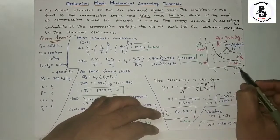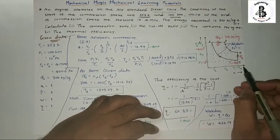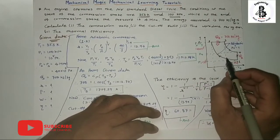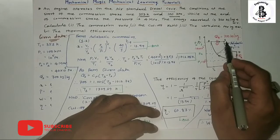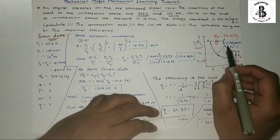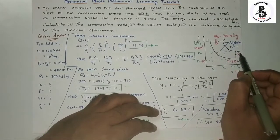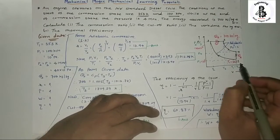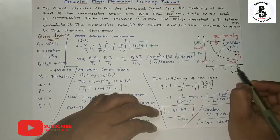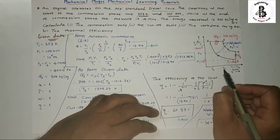Starting with the PV diagram: the x-axis represents volume and the y-axis represents pressure. From the Diesel cycle: process 1→2 is adiabatic compression, process 2→3 is constant pressure heat addition, process 3→4 is adiabatic expansion, and process 4→1 is constant volume heat rejection. From the data, V1 = V4 and V2, V3 are noted.